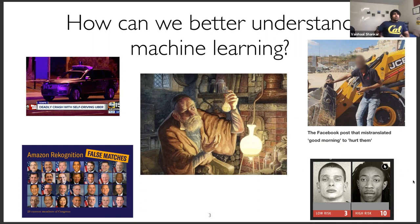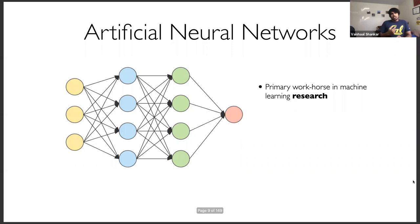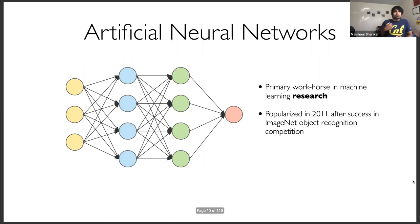We know self-driving cars can crash, translation systems can make big mistakes, and systemic bias in society can get propagated into our machine learning systems — we're effectively automating bias using ML on raw data. To better understand machine learning, we need to look at its primary workhorse over the last 10 years. Most state-of-the-art algorithms in speech, NLP, and computer vision are based on artificial neural networks. Machine learning has been around 20 to 60 years depending on how you define it.